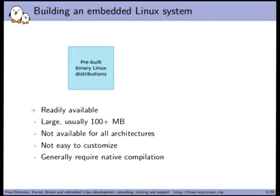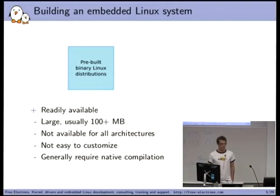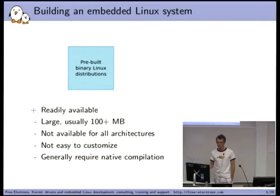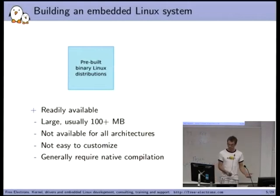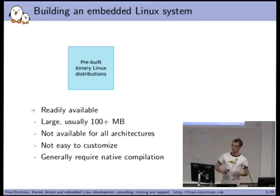To build an embedded Linux system and integrate all components — init system, graphics stack, network processes — there are different solutions. The first thing many people do is use binary Linux distributions like Debian, Ubuntu, or Raspbian. These are pre-built, readily available, easy to install, but they're quite large, not available for all architectures, and not easy to customize. Rebuilding with different compiler options is tricky and generally requires native compilation, which on a Raspberry Pi can take a very long time.